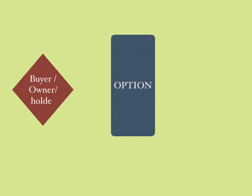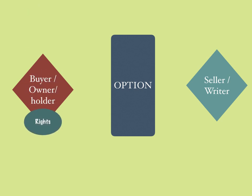Every option contract has two parties: the buyer, also called as the owner or the holder, and the seller, also called as the writer. The buyer, owner, and holder all mean the same side of the contract. The buyer has all the rights. The seller or writer has all the obligations to do whatever the buyer wants. Option means choice — the buyer is having the choice, and the writer is giving the buyer that choice.